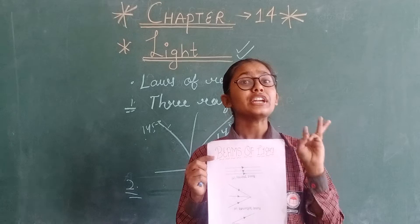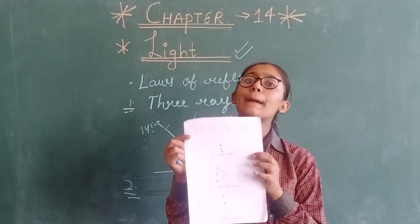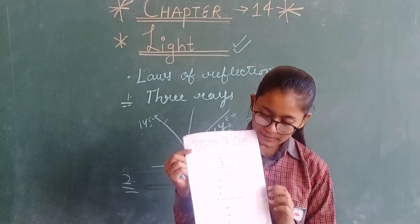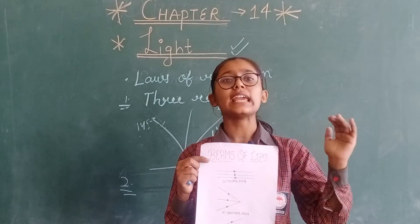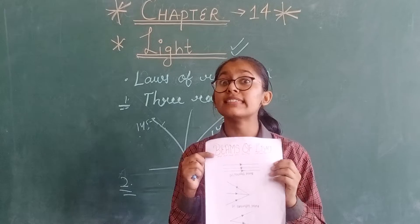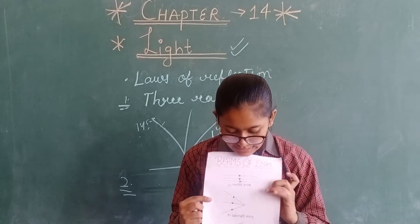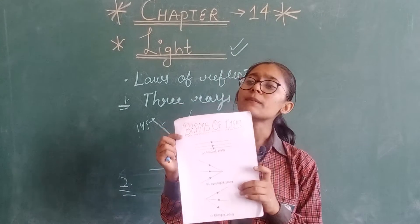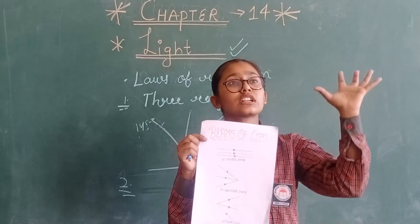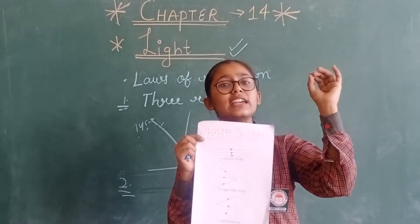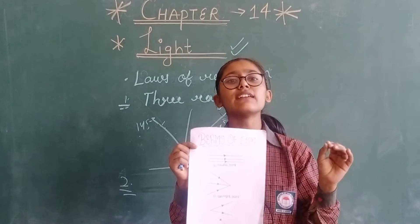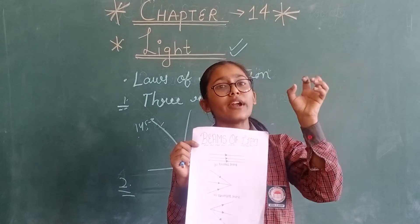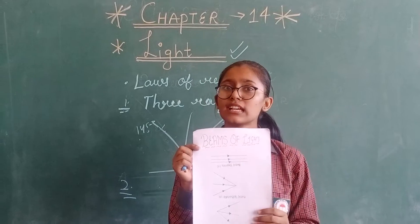There are three types of beams: parallel beams, convergent beams and divergent beams. First is parallel beams. Parallel beams means that they will go in the same line, they will never meet again. Second is convergent beams. Convergent beams means they will come from different places and they will meet at a point. Divergent means that they will come from a point and they will spread out.